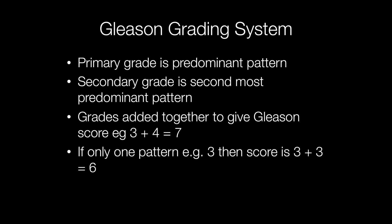Gleason grading works by assessing the primary grade — the predominant pattern — and then assessing the secondary grade, which is the second most predominant pattern. The grades of the two patterns are then added together. So if the main tumor pattern is grade three and the secondary tumor pattern is grade four, then the Gleason score is 3 plus 4 equals 7. If only one pattern is present, for example grade three, then the score is doubled, so the score would be 3 plus 3 equals 6.